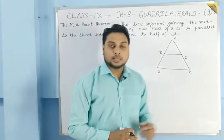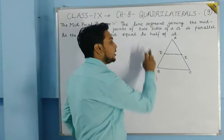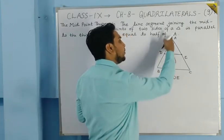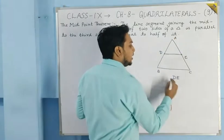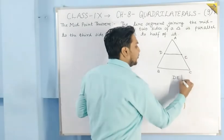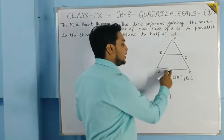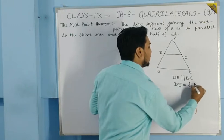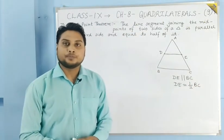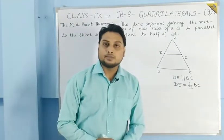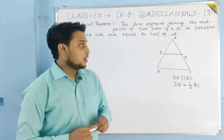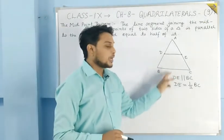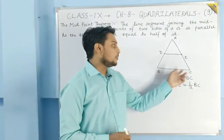So the concept here is: if D is the midpoint of AB and E is the midpoint of AC, and we join DE, then DE will be parallel to the third side BC, and the length of DE will be equal to half of BC. This is the statement of the midpoint theorem and it is very important from the examination point of view. Today we will prove that DE is parallel to BC and its length is equal to half of BC.